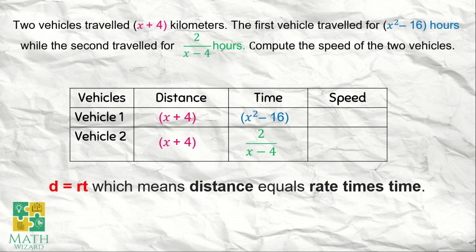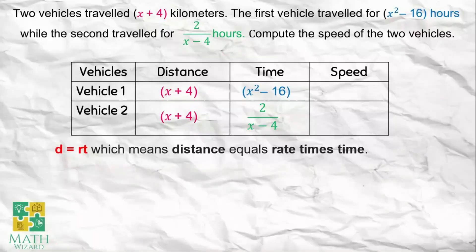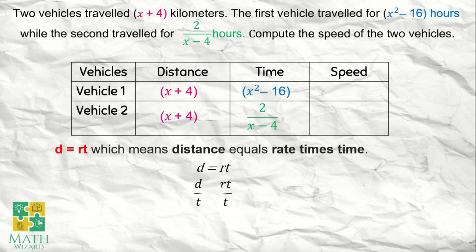How do we find the speed? If the given formula is distance equals rate times time, we'll manipulate the formula distance equals rate times time to get the speed or the rate. Let's write it: d equals rt. Divide both sides by time. Why divide both sides by time? So that only rate remains on the right side of the equation. We have rate equals distance over time. Therefore, to get the speed, we need to divide the distance over time.